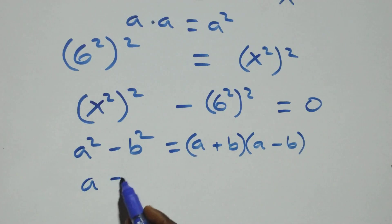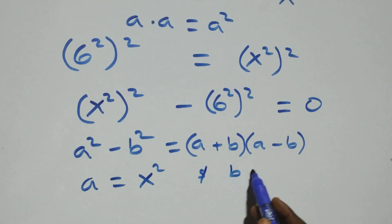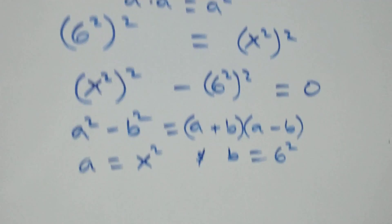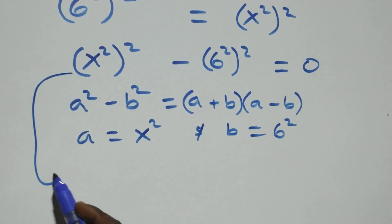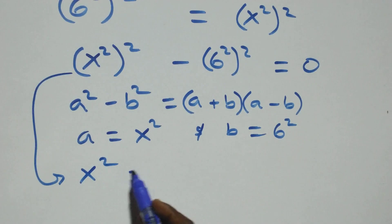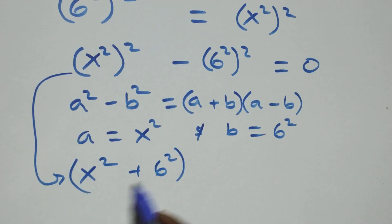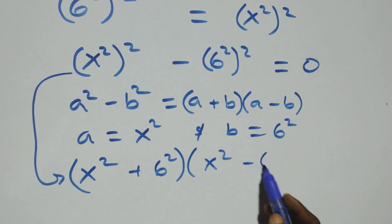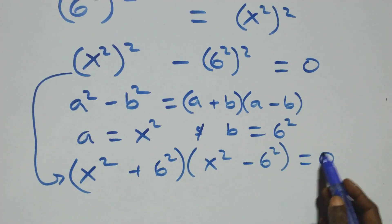Here, a stands as x squared and b stands as 6 squared. So what we have becomes (x squared + 6 squared)(x squared − 6 squared) equals 0.